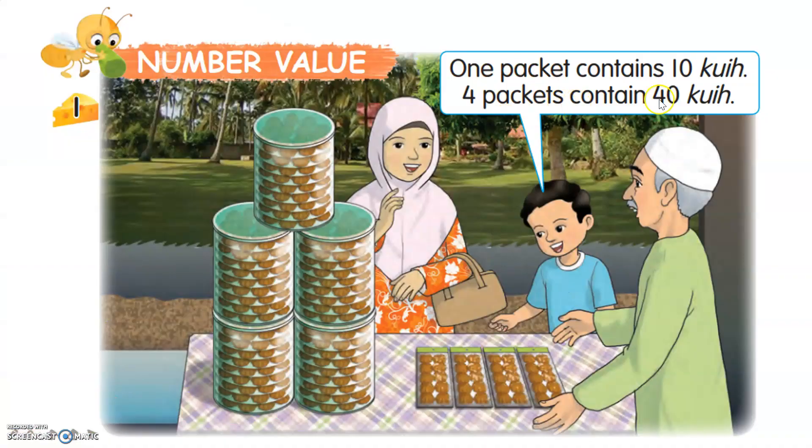One packet contains 10 kuih. Four packets contain 40 kuih. So if we look at the pictures here there are two types of containers. Here is the larger one and the smaller one. The smaller one is packets here. So how many packets here? One, two, three, four. So each packet contains 10. So 10 plus 10 plus 10 plus 10 equals 40.